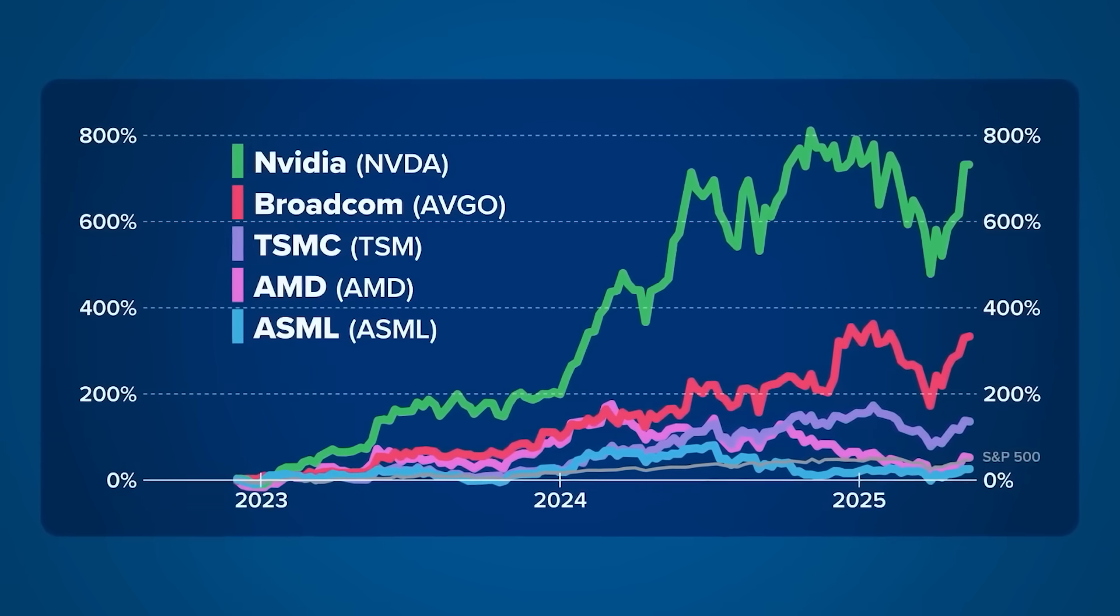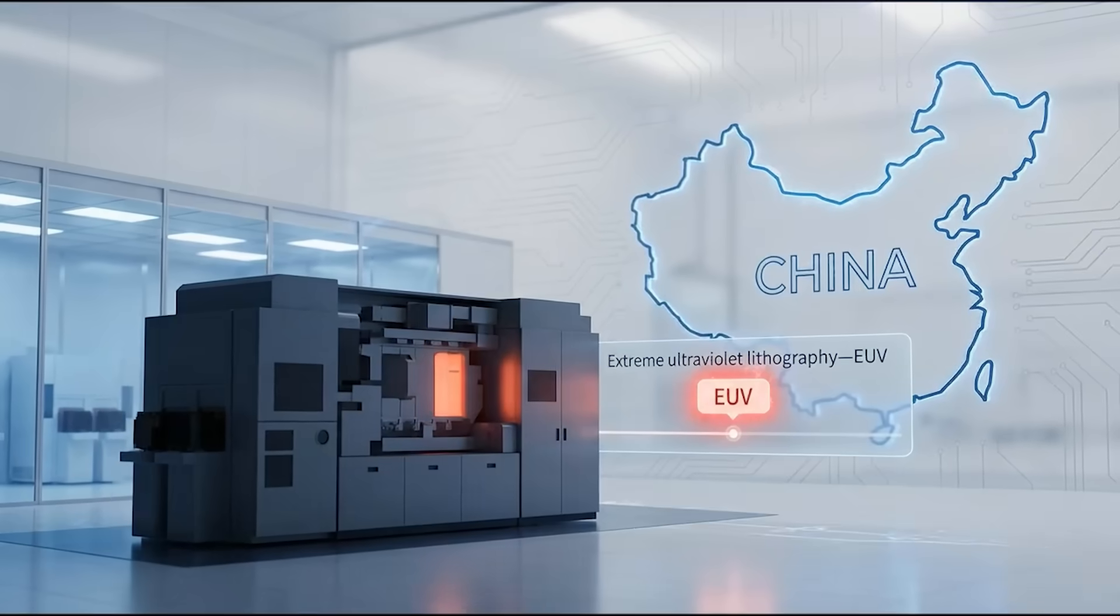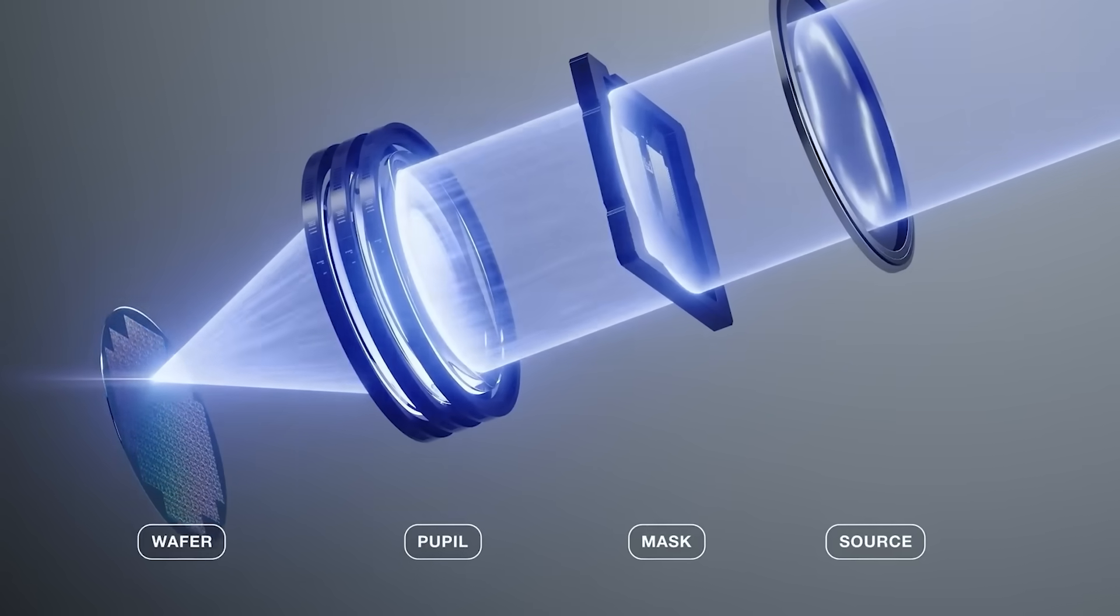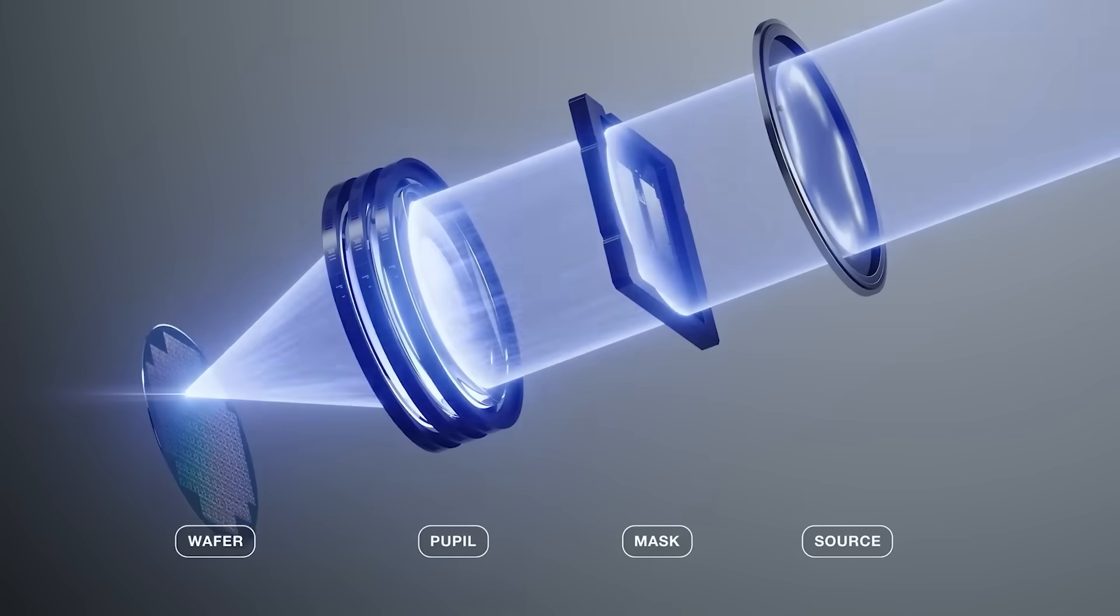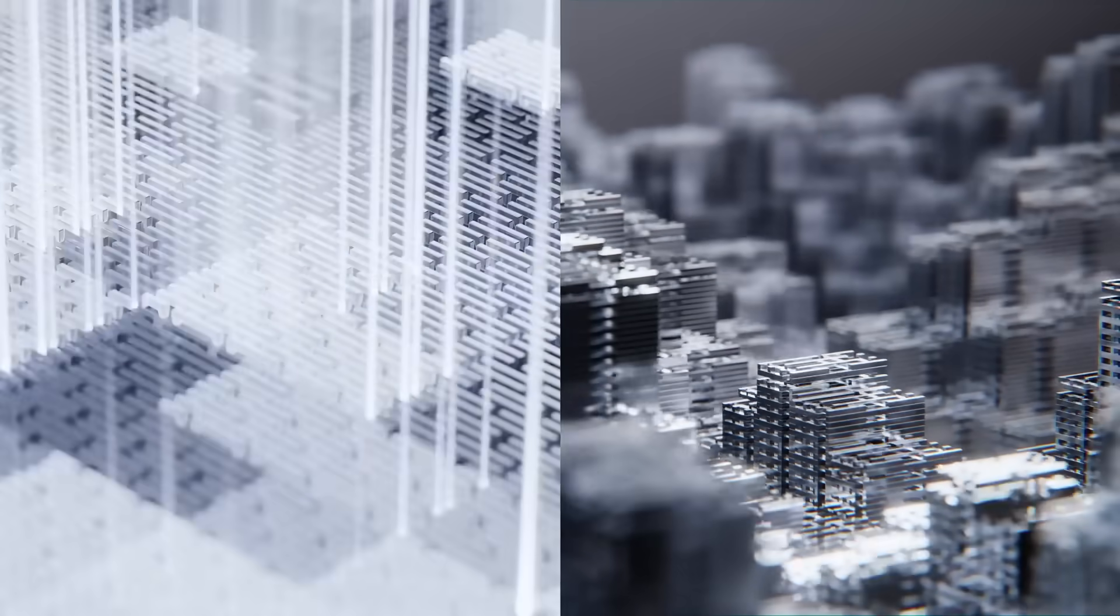For years, one assumption sat at the center of the global semiconductor race. Extreme ultraviolet lithography, often shortened to EUV, the process that uses ultra-short wavelength light to etch the smallest transistor patterns ever made onto silicon.